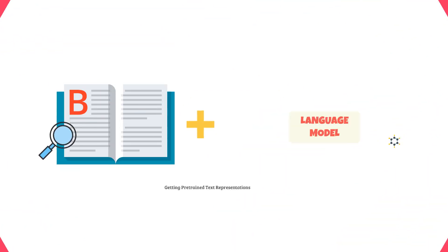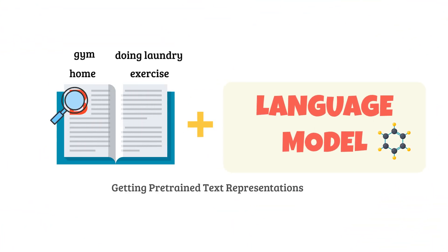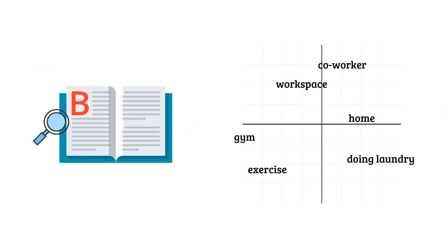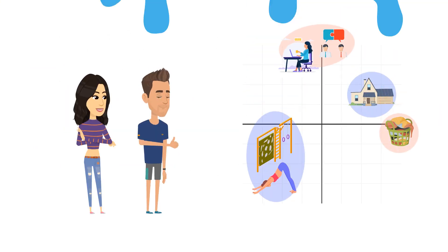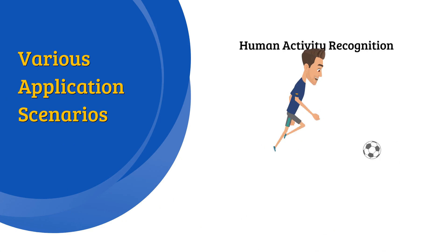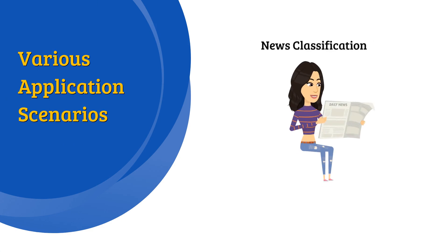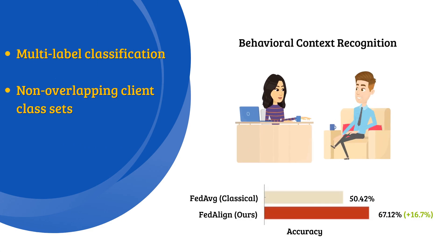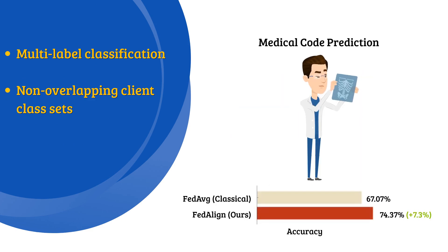The natural language class names are regarded as the common ground for label encoders to anchor class representations and guide the data encoder learning across clients. Our method exhibits excellent performance, even in the most challenging scenario of multi-label classification with non-overlapping client class sets.